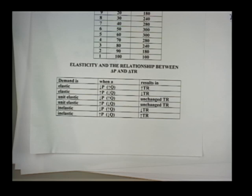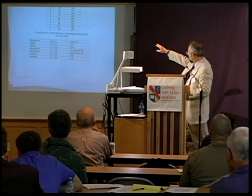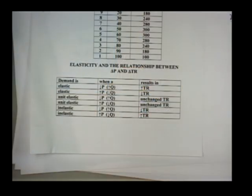If you're in a unit elastic area — between $5 and $6 in the example — even though you raise your price, people buy less but your total revenue is unchanged, meaning the percent change in price is exactly equal to the percent change in quantity. Finally, in the inelastic range — the lower half of a linear demand curve — every time you raise your price you get greater total revenue.